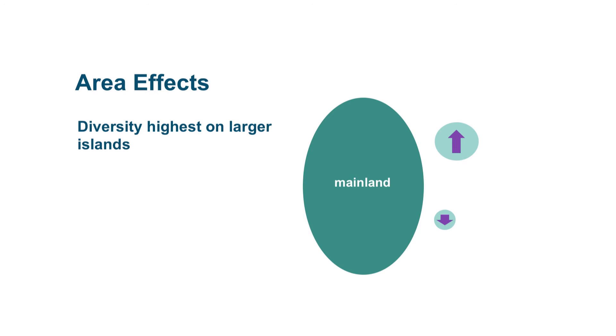Area effects are pretty simple. Larger islands tend to have higher diversity than smaller islands do. That's just because on a larger island, there are more habitats and micro-habitats, which are just little tiny habitats.